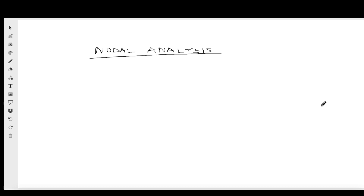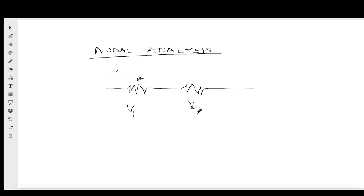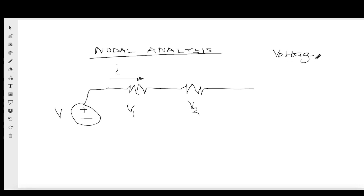So what does voltage and current division mean? Remember that when two resistors or two components are in series, the same current goes through them but different voltages are dropped across them. If there is a voltage source supplying the system — plus/minus V — that voltage will be divided into the voltage dropped across the first resistor and the voltage dropped across the second resistor. That's where voltage division comes in. We apply it to components in series.